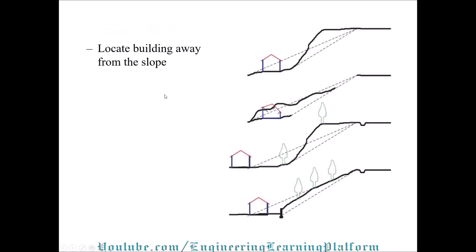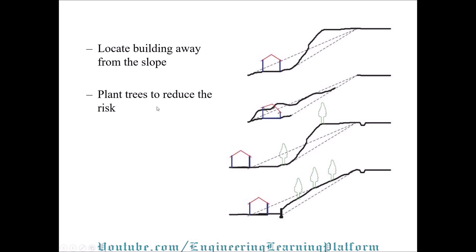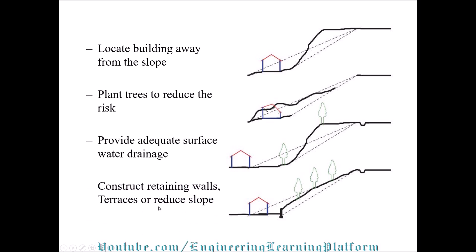Locate the building away from the slope — that is the most immediate solution you can provide. Plant trees to reduce the risk, meaning you are providing anchorage for the ground. Provide adequate surface water drainage, as shown in this figure, so that the slope remains appropriately stable.